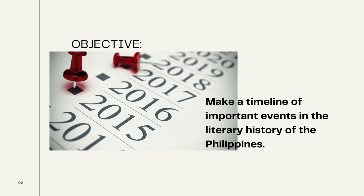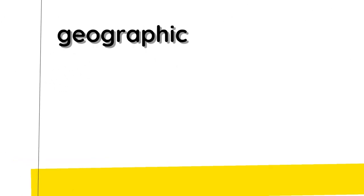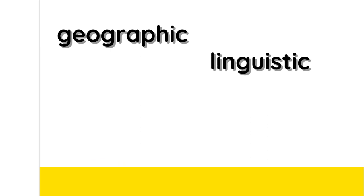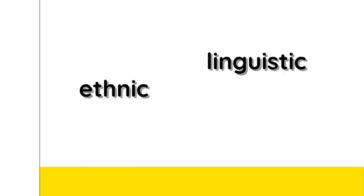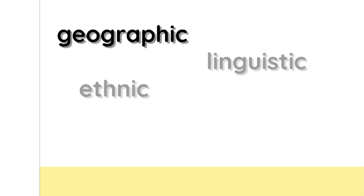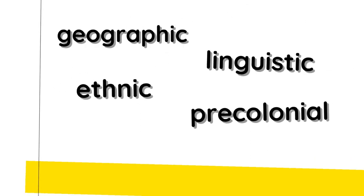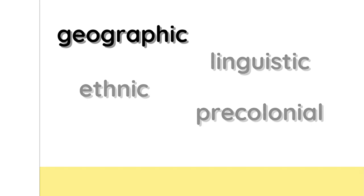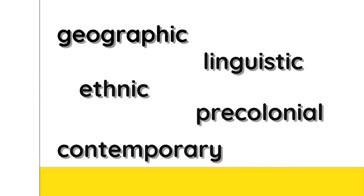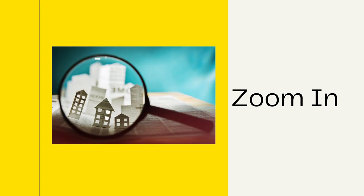These five words are geographic, linguistic, ethnic, pre-colonial, and contemporary. To help us understand and differentiate these five words, we will play a game called Zoom In.